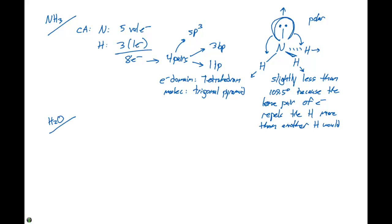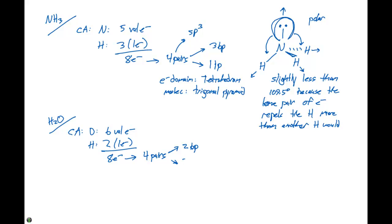Let's look at another example — water. In water, the central atom is oxygen, which contributes six valence electrons. There are two hydrogen ligands, each contributing one electron. This gives us a total of eight electrons and four pairs. The oxygen is bonded to two hydrogens, so we have two bonding pairs and two lone pairs. With four pairs total, our electron domain geometry is still a tetrahedron and the hybridization is sp3.